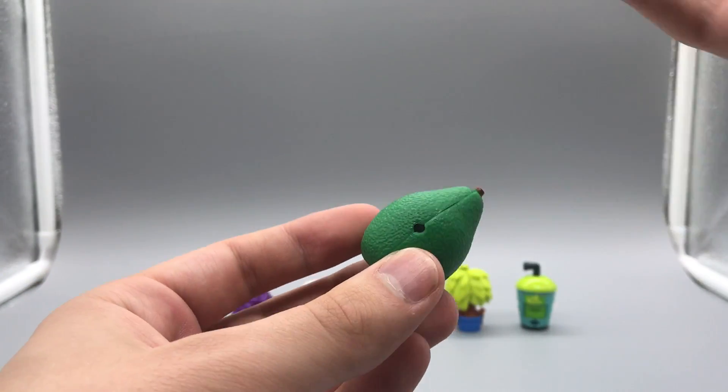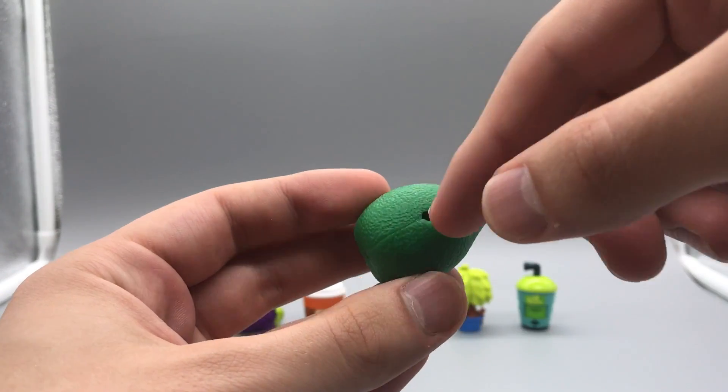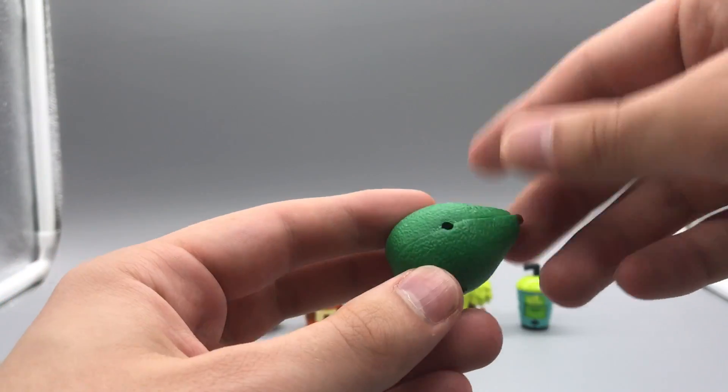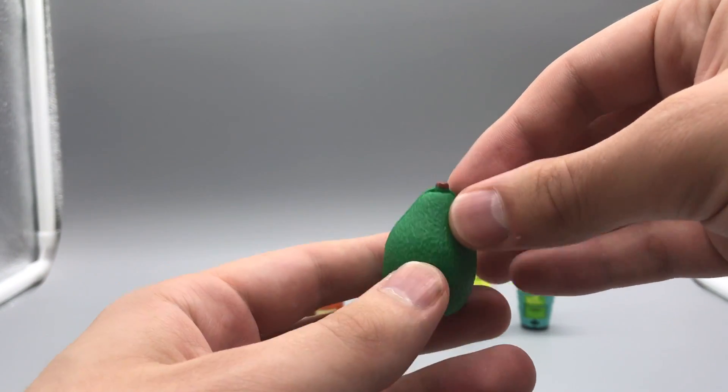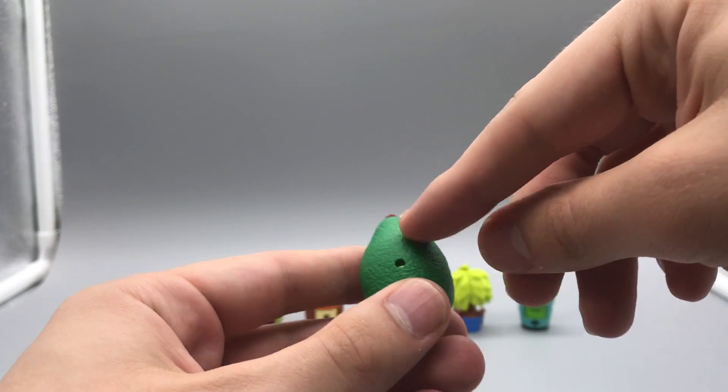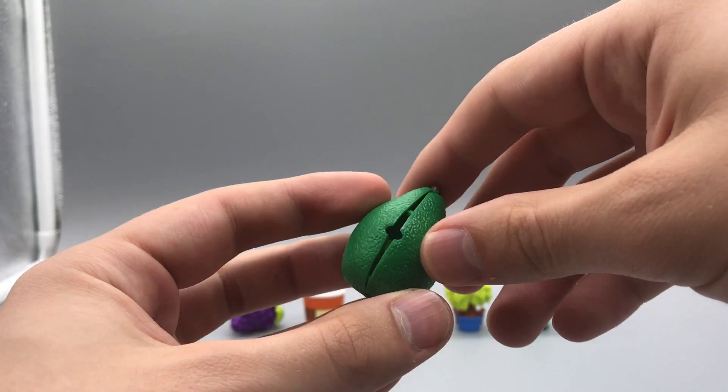Avocandu, obviously an avocado, green all around. You got some holes but those are for if you happen to swallow one so you can breathe so that's understandable. Got a little stem. The texturing on the avocado is very nice.